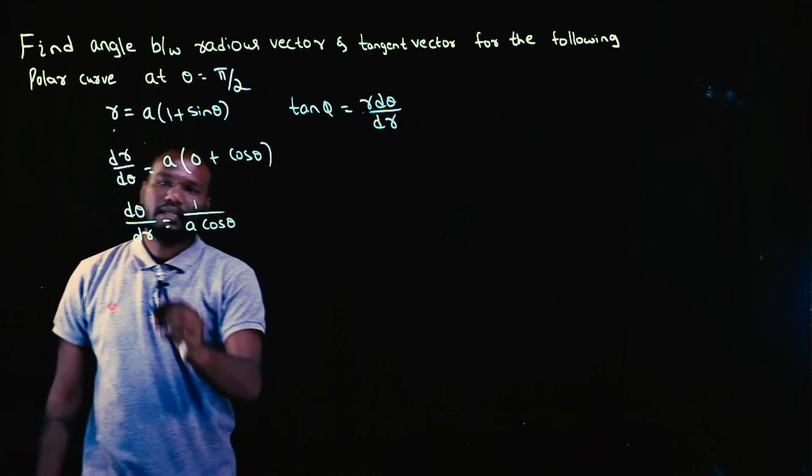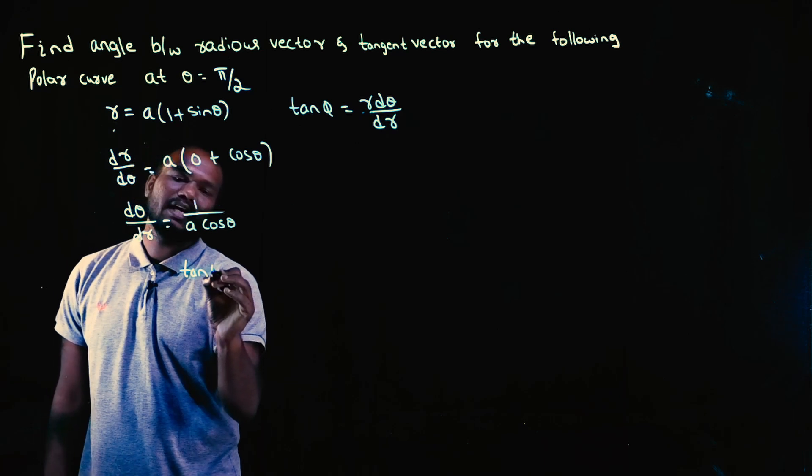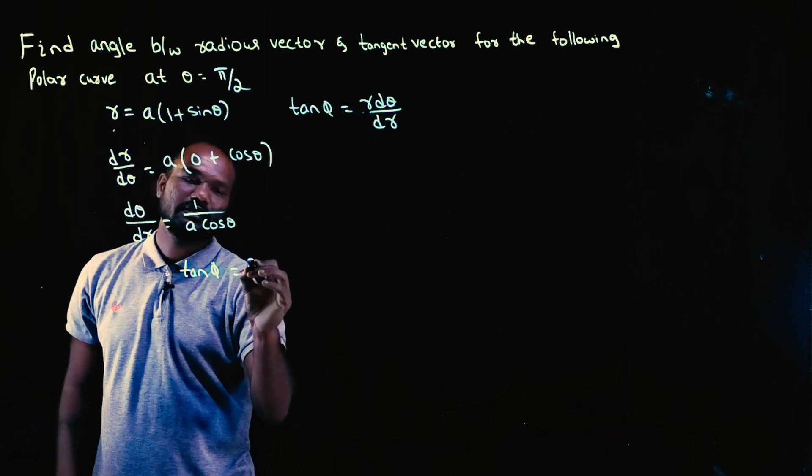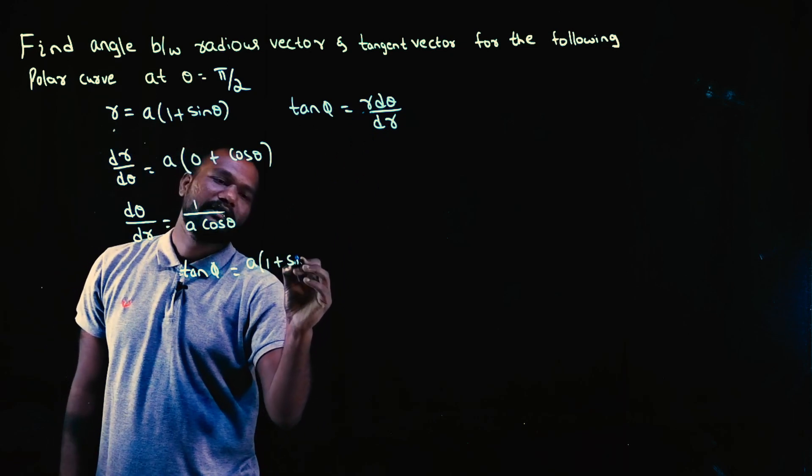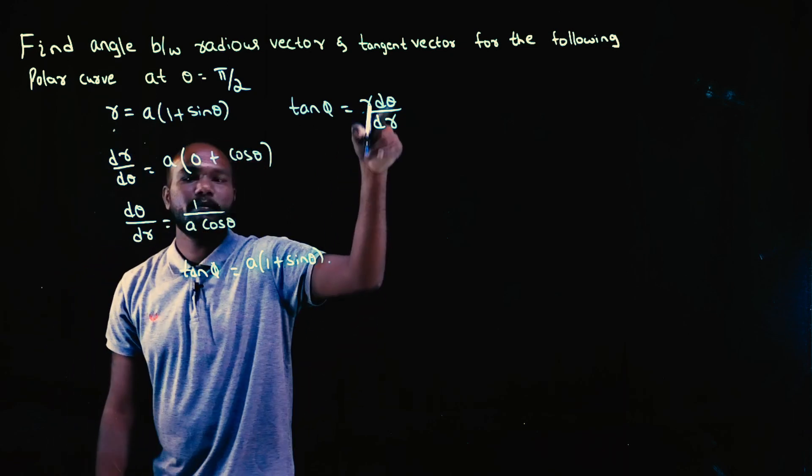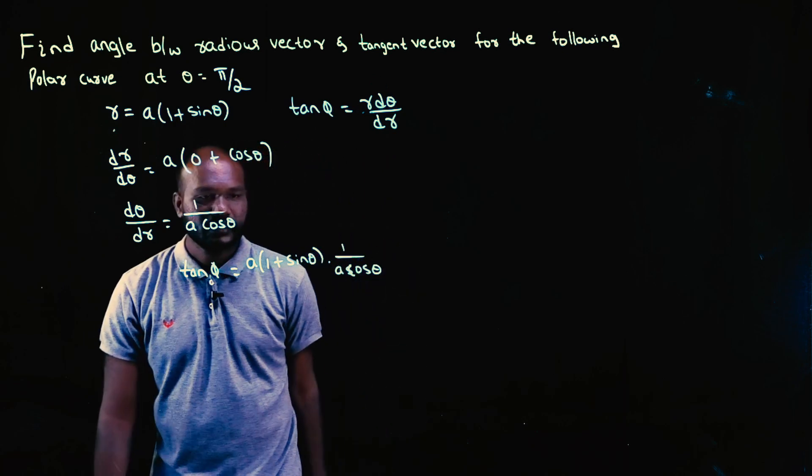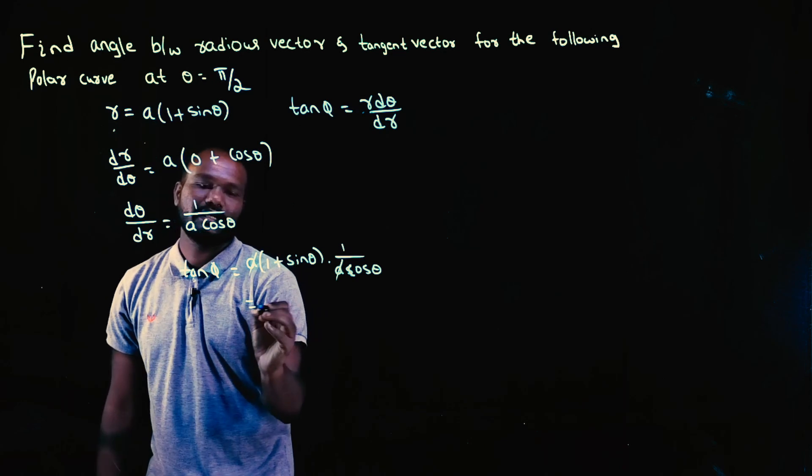So now tan φ, I'll just substitute here. Tan φ formula is R times dθ by dr. R is given in the question, that is a(1 + sin θ) times dθ by dr, that is 1/(a cos θ). So this a and this a get cancelled.